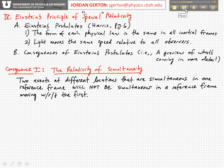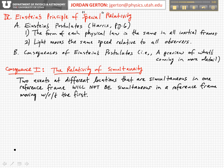The first consequence of Einstein's postulates can be summed up very succinctly in what's written here: two events at different locations that are simultaneous in one reference frame will not be simultaneous in another reference frame that is moving with respect to the first.